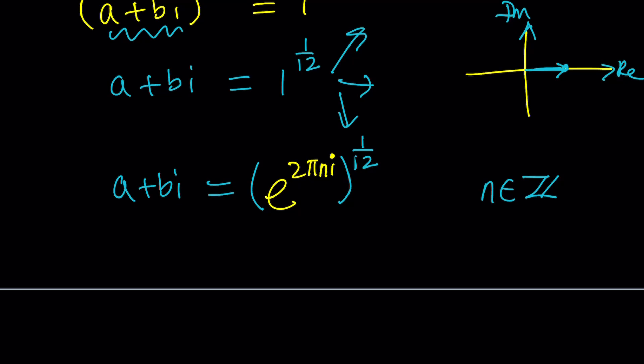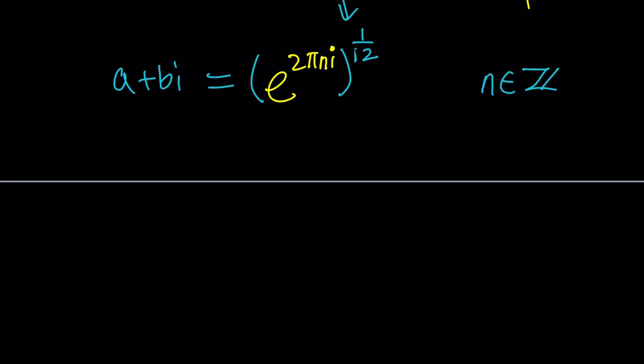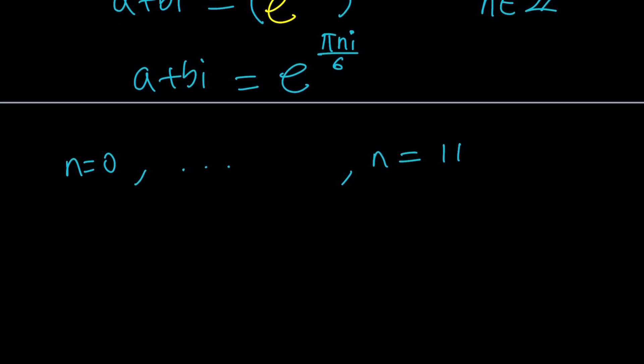We are going to find the twelfth roots of this number, and that will give us a plus bi. How do you do that? Properties of exponents is going to give you pi n i divided by six. That's going to be my number, a plus bi, and this means that n starts with zero, or you can start with one and end with twelve. That's fine too, as long as you use twelve different values. If I start with zero, I have to stop at eleven, because when I get to twelve, I'm getting two pi n, which is the same thing, repeats over and over. But these are going to be unique roots. They're all different.